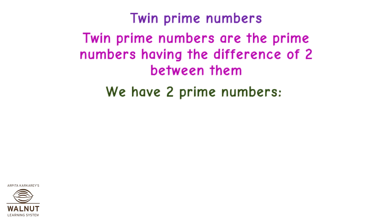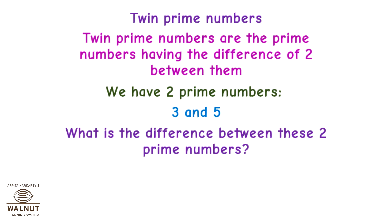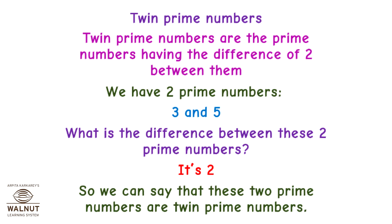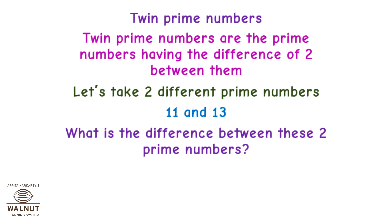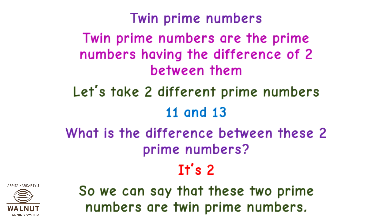We have two Prime Numbers, 3 and 5. What is the difference between these two Prime Numbers? It's 2. So we can say that these two Prime Numbers are Twin Prime Numbers. Let's take two different Prime Numbers, 11 and 13. What is the difference between these two Prime Numbers? It's 2. So we can say that these two Prime Numbers are Twin Prime Numbers.